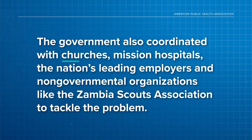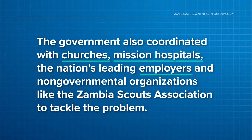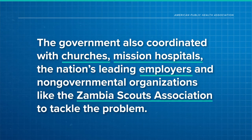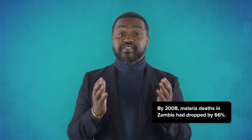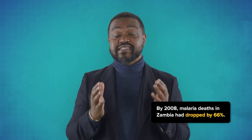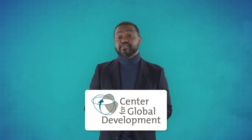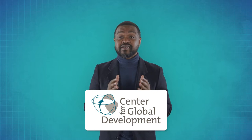But the government also coordinated with churches, mission hospitals, the nation's leading employers, and non-governmental organizations like the Zambia Scouts Association to tackle the problem. These partnerships helped get supplies into Zambia, organized volunteers to deliver nets and medicine to people's homes, and encouraged community members to take preventative steps against the disease. And by 2008, malaria deaths in Zambia had dropped by 66%. According to the Center for Global Development, this success was possible because the government partnered with all those other institutions.